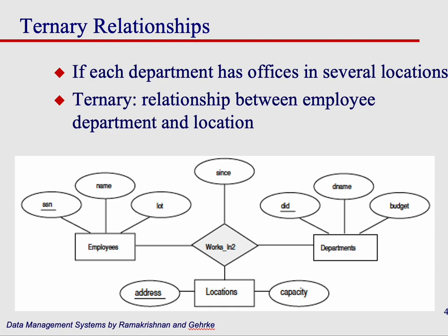This is also an example where a relationship has an attribute as well, to keep track of the date. In this case, you have employee which has attributes, department which has attributes, and location which has attributes, but they are all related together — they're not binary. You can't say an employee works at this location or an employee works at this department. You really want to say that the employee works at this department in this location. So they are all related to each other.